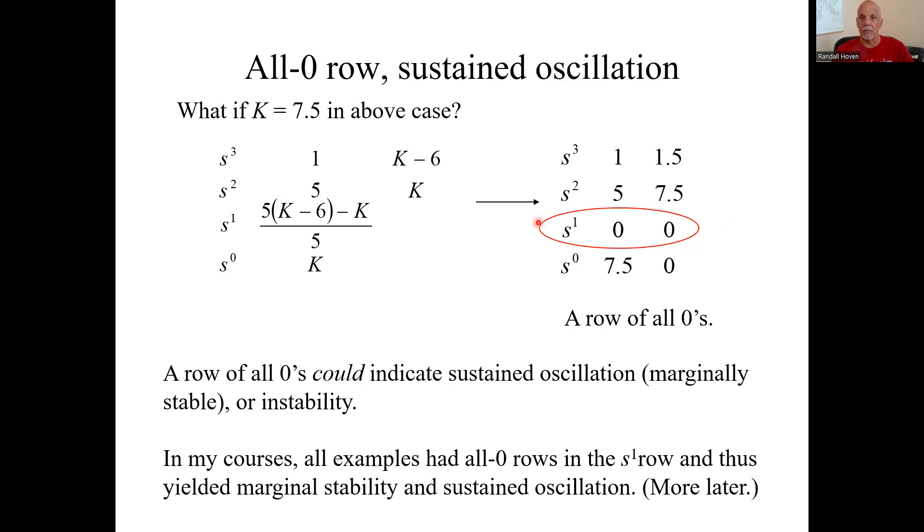And my spoiler alert is if it's only in the S to the one row and not some row above it, you'll get marginal stability. In my courses, I kept things simple. Any all zero row was the S to the one row. And I told my students they could assume marginal stability. So that if I asked them for sustained oscillation, I'll talk about that in a second, they can assume there would be sustained oscillation.